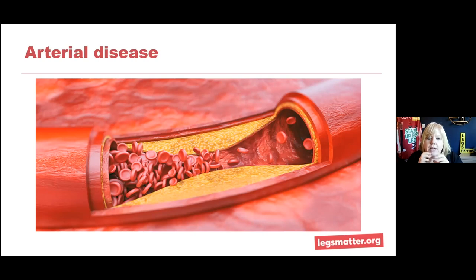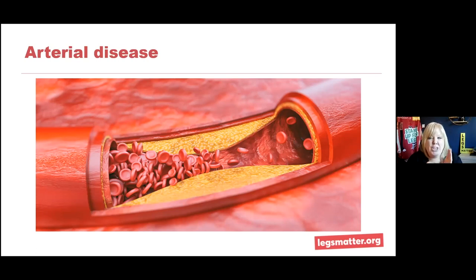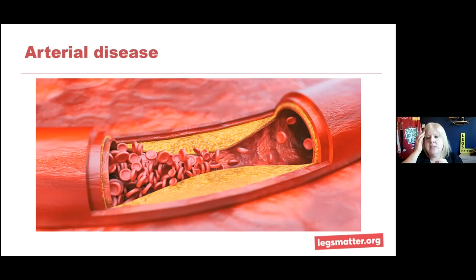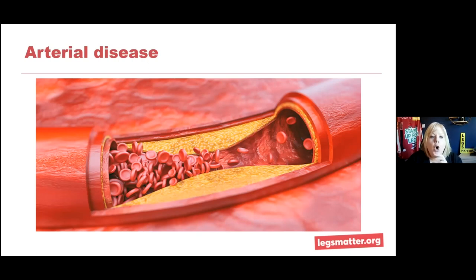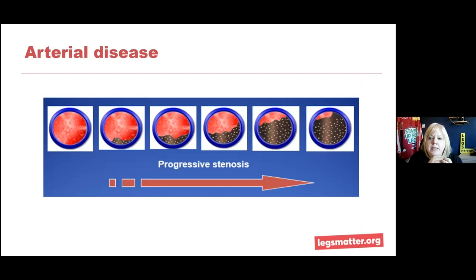Arterial disease can happen acutely — you can get acute blockages of the arteries — but that is really rare and not something you need to be overly concerned about. If that happened, you would have acute pain and be seeking help immediately; your body will tell you that you need help. But arterial disease that forms as atheroma is much more common. About 5% of patients over the age of 55 have significant arterial disease, but this disease doesn't come instantly overnight.